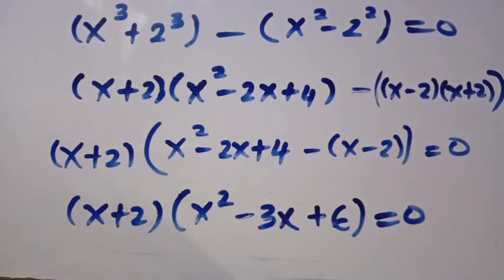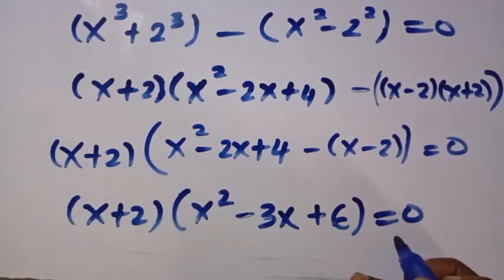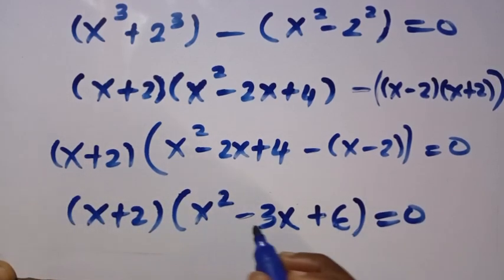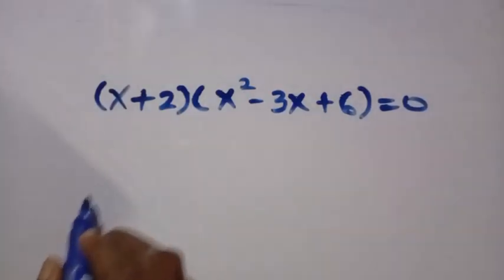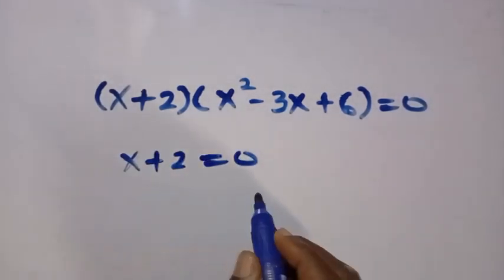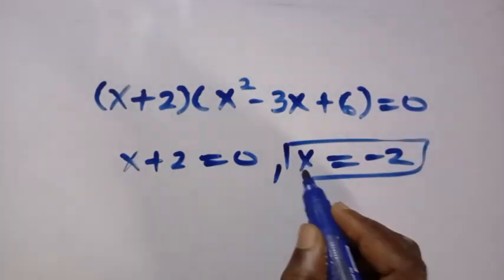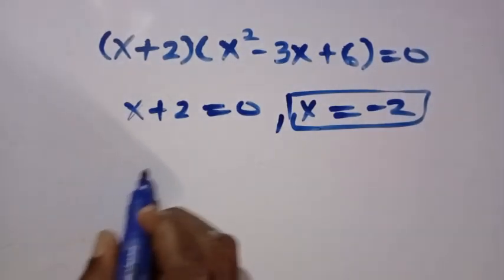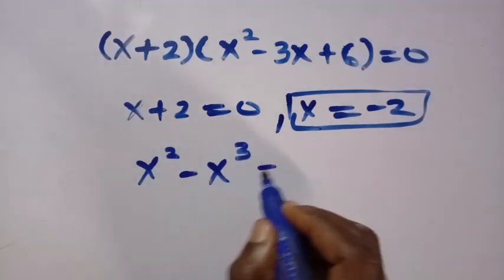We now have two different factors: x plus 2, and x squared minus 3x plus 6, equals 0. We let x plus 2 equals 0, or x squared minus 3x plus 6 equals 0. Letting x plus 2 equals 0 shows that x equals minus 2. This is the first solution. Substituting back into the original equation x squared minus x cubed equals 12.